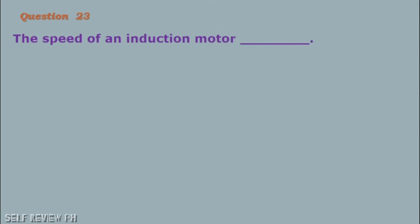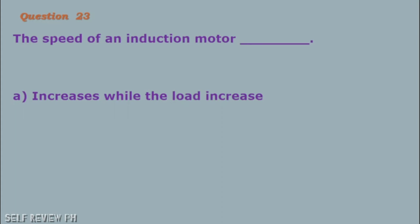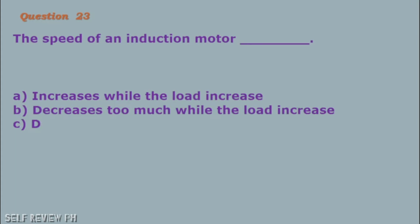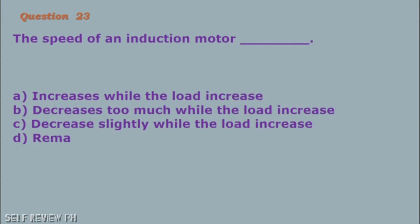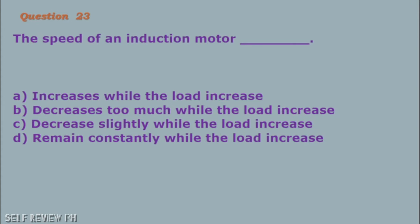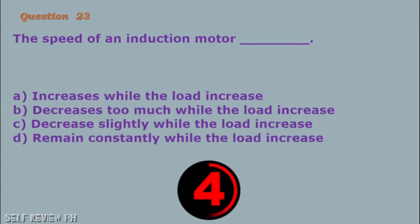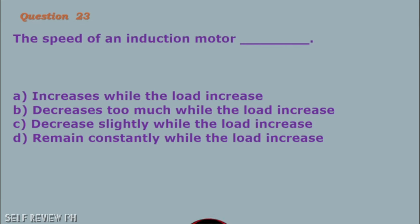Question number 23: The speed of an induction motor blank. A. Increases while the load increases B. Decreases too much while the load increases C. Decreases slightly while the load increases D. Remains constant while the load increases. The correct answer is letter C, decreases slightly while the load increases.